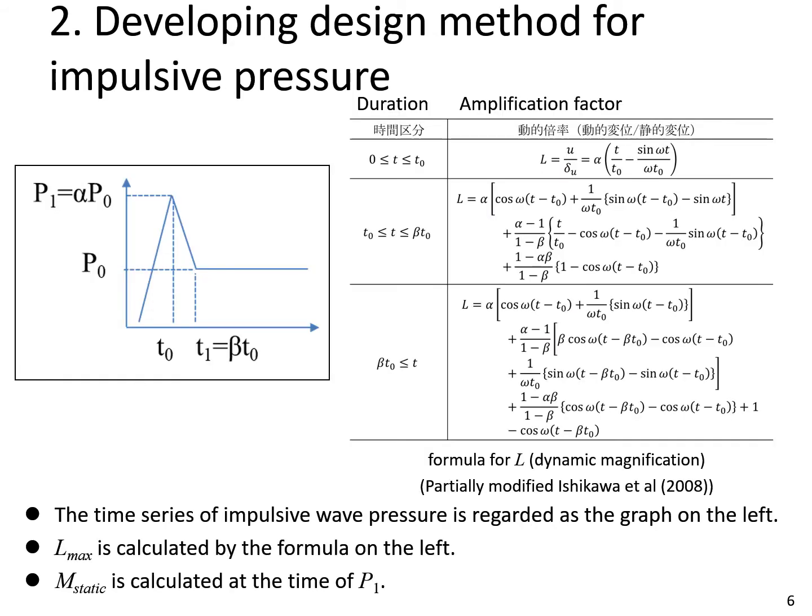This slide shows how to calculate M static and Lmax. We regard the time series of impulsive wave pressure as a graph on the left. We determine the P0 as a pressure becoming constant after a peak. Then we can calculate alpha, T0, and beta squared.